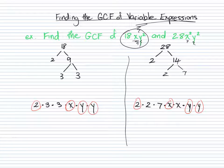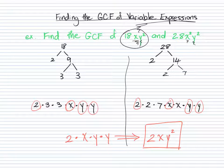And so our GCF is 2 times x times y times y, or we can go ahead and shorten that a little bit, and it becomes 2xy squared. And that's how you write the GCF of a variable expression.